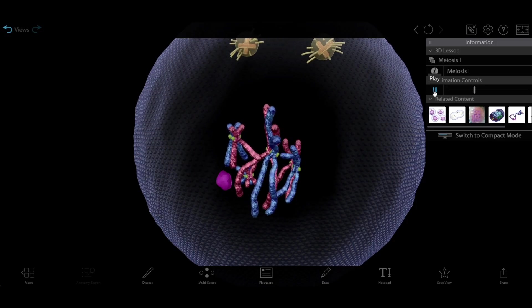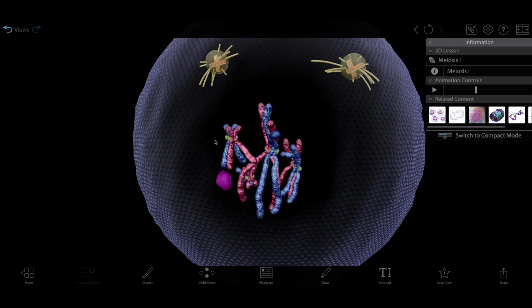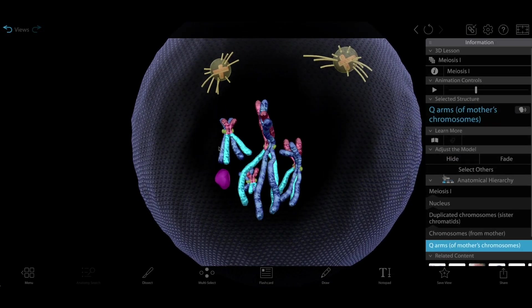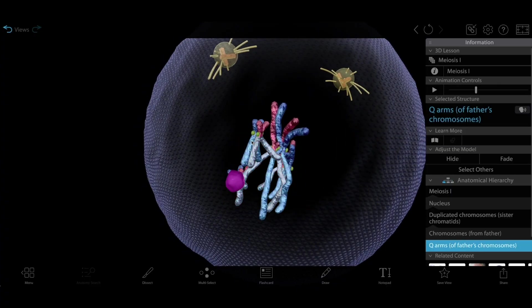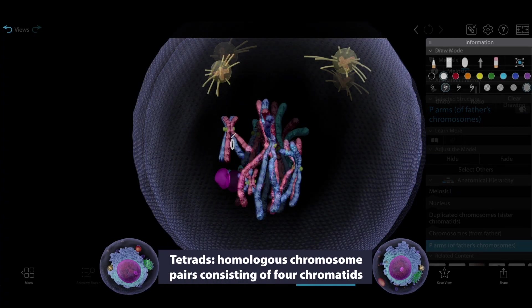Homologous chromosomes, that is, maternal and paternal chromosomes that contain genes controlling the same inherited traits, pair up with one another. These chromosome clusters are called tetrads.